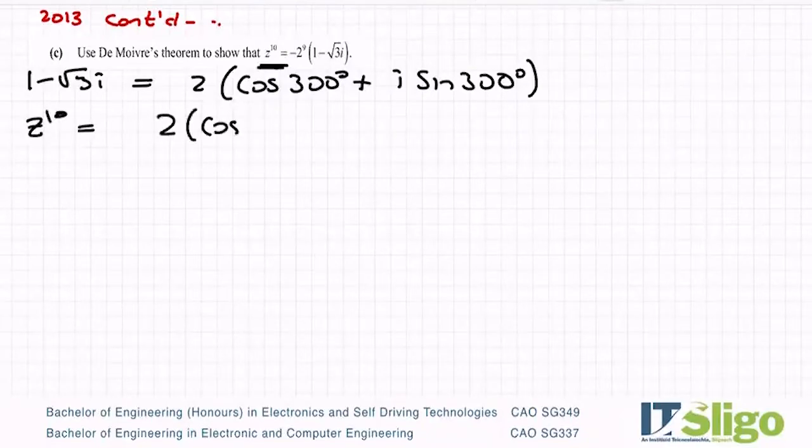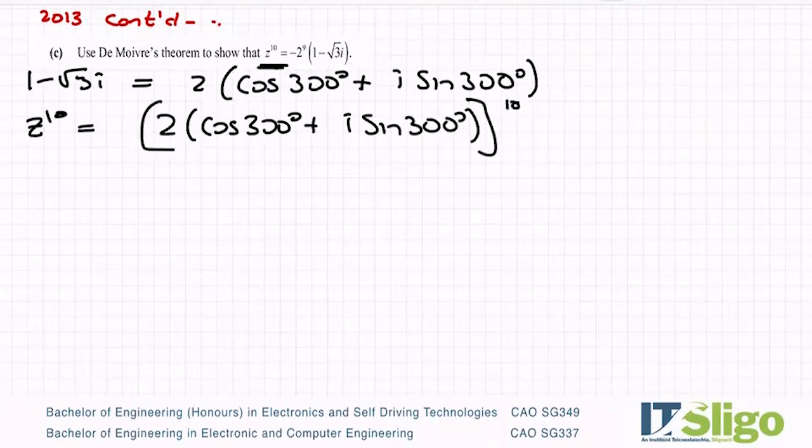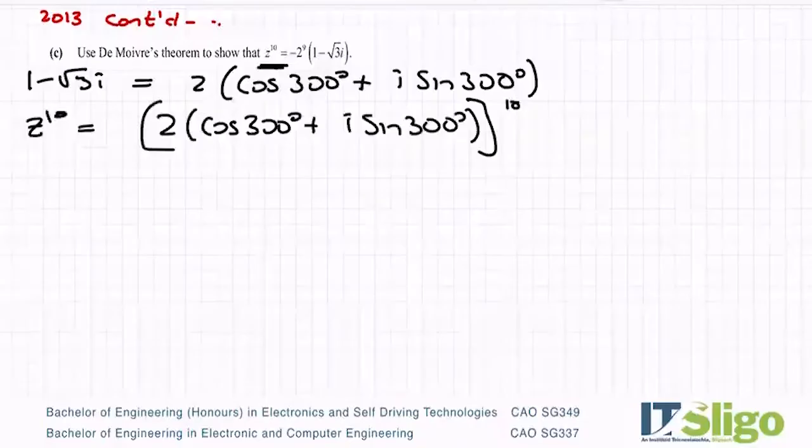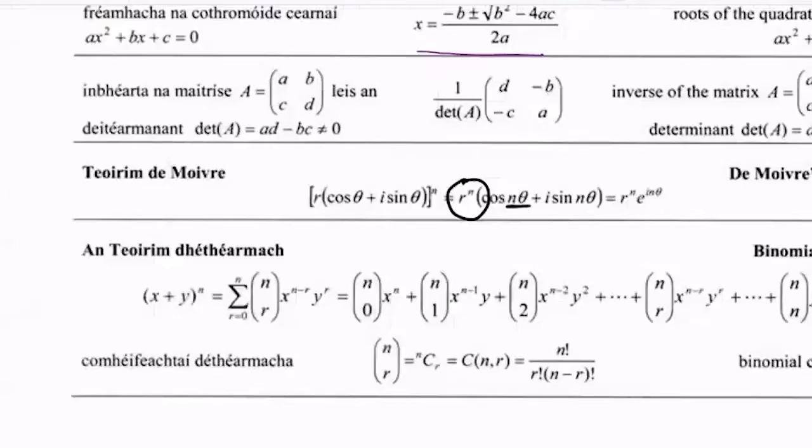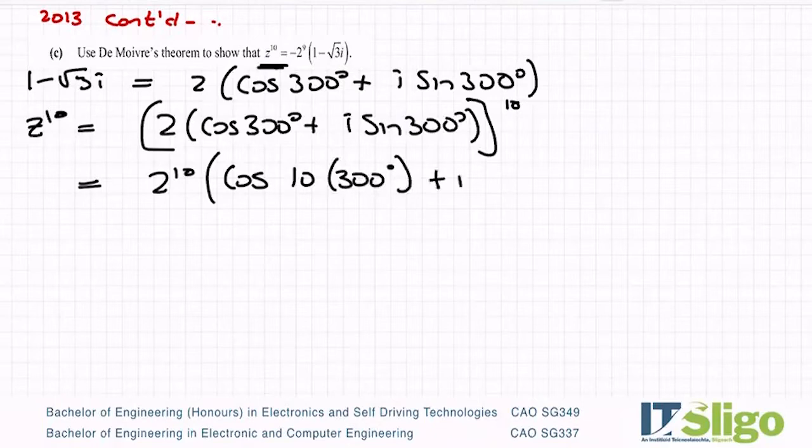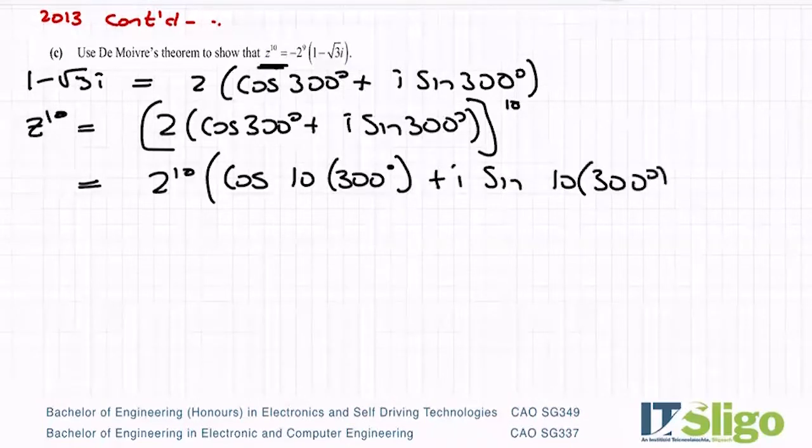So it's 2 times cos 300 degrees plus i sine 300 degrees, all to the power of 10. And then it's 2 to the power of 10 times cos 10 times 300 degrees plus i sine 10 times 300 degrees. So let's work that out. And what is our answer going to be?